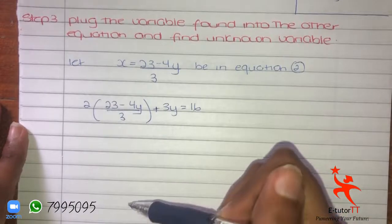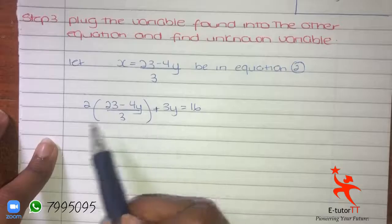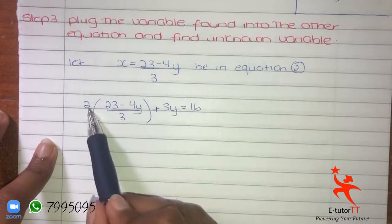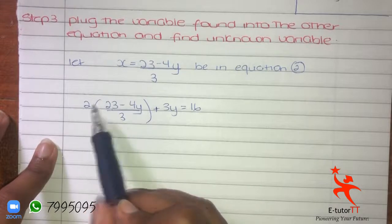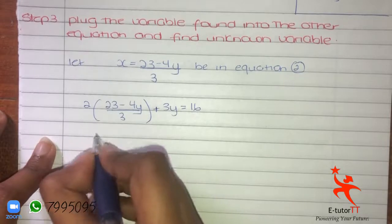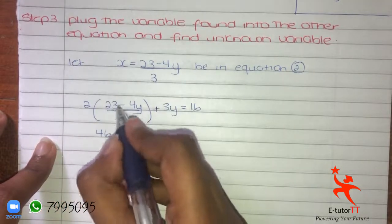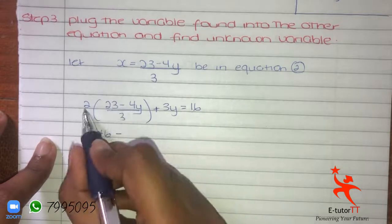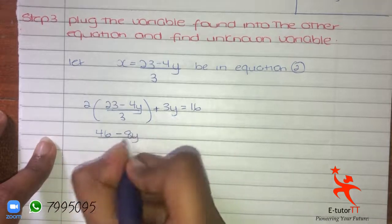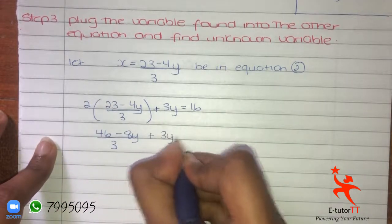Now we have to find the unknown variable Y. First let's simplify — let's expand the brackets by multiplying: 2 × 23 = 46, and 2 × (−4Y) = −8Y, so we get 46 − 8Y/3. Remember, a minus times a positive is a minus, so we keep the denominator of 3. Plus 3Y is equal to 16.